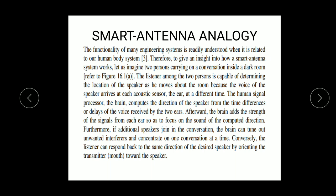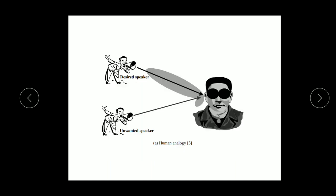That means the listener only concentrates on the desired person and ignores the undesired person at a time. Conversely, the listener can respond back in the same direction of the desired speaker by orienting the transmitter towards the speaker. This is the simple example to understand the smart techniques.